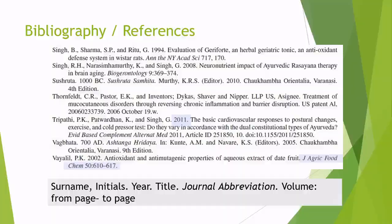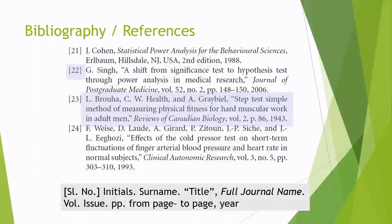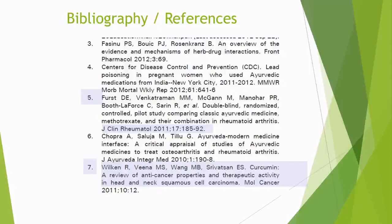Coming to the bibliography or reference section format, one style uses: surname, comma, initials, full stop, then year, dot, title, dot, then journal abbreviation in italics, then volume and so on. Another style uses serial numbers in square brackets, then initials, a dot, then surname, then the title in inverted commas and the full journal name in italics. A third pattern writes numbers without brackets, surname and initials without full stops or commas, then the paper title and journal abbreviation.